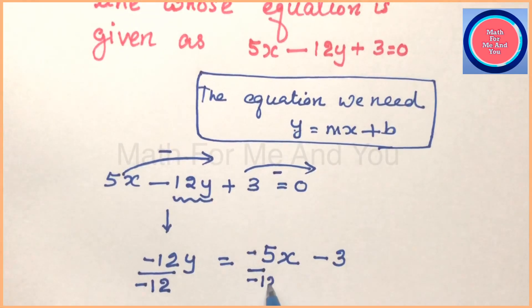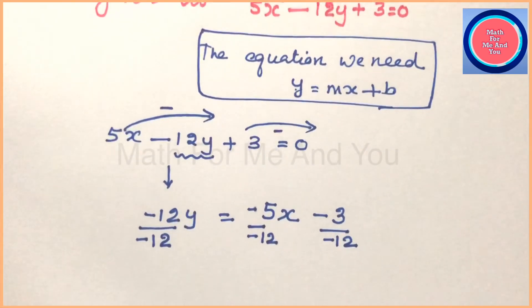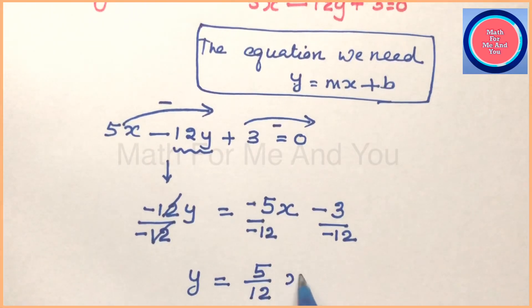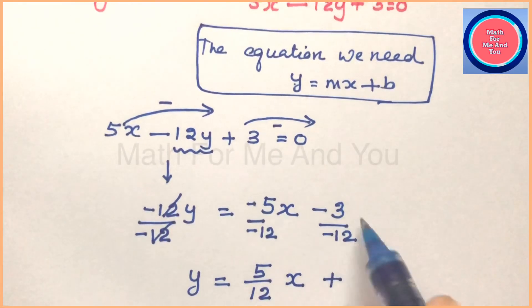Then we can divide throughout with the number along with y, it is minus 12 here, so we can cancel every term with minus 12. Left side and right side each term divide by minus 12. Minus 12 over minus 12 cancels and we get only y on the left side. Minus minus plus, 5 over 12 x, minus minus plus, and 3 over 12 cancel, we can write 1 over 4.